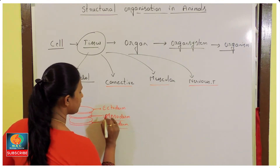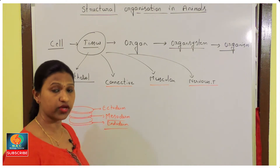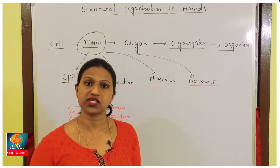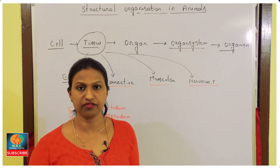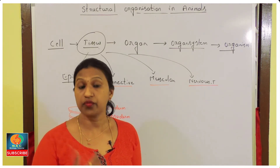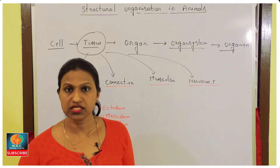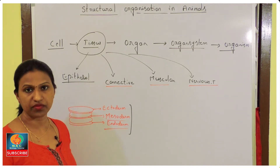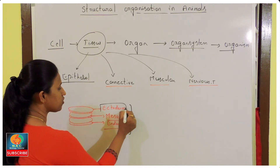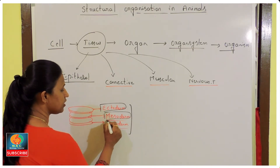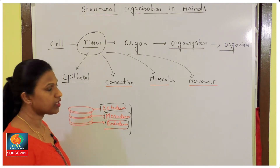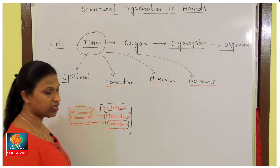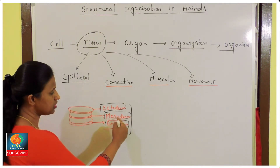All our body parts — eye, skin, nervous system, digestive system consisting of stomach, liver, intestine, reproductive system — all these organ systems are made by only these three germ layers: ectoderm (outermost), mesoderm (middle), and endoderm (innermost). These four tissues are made from these three germ layers.